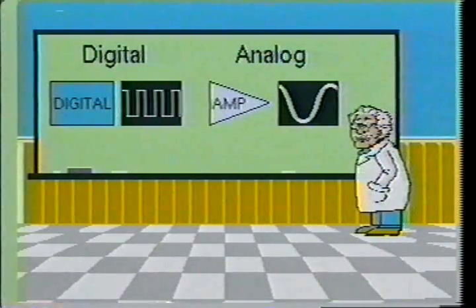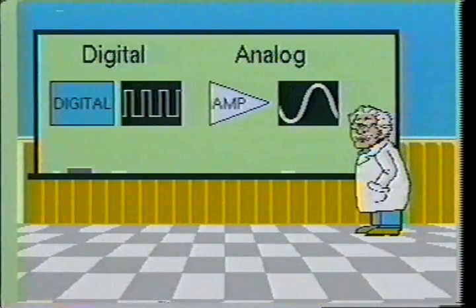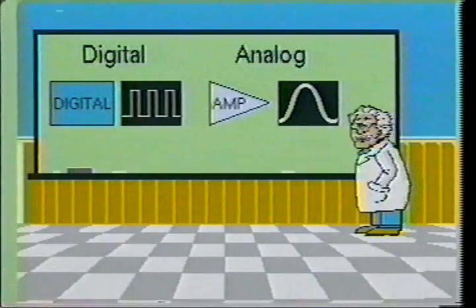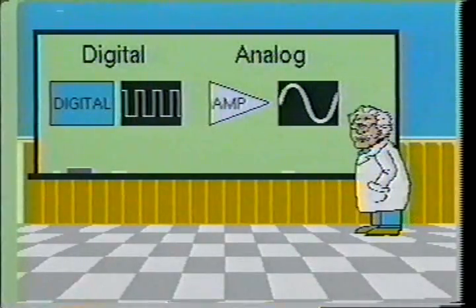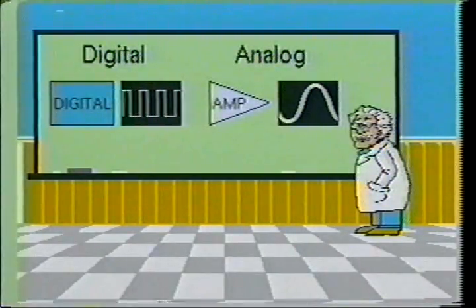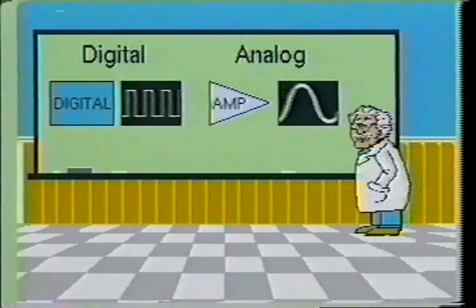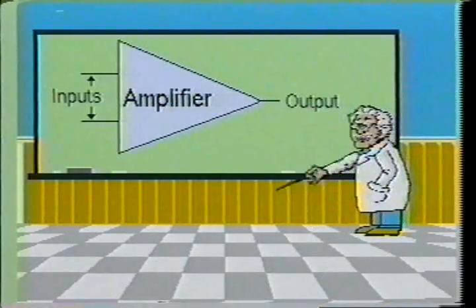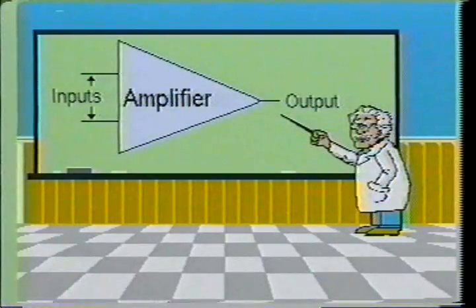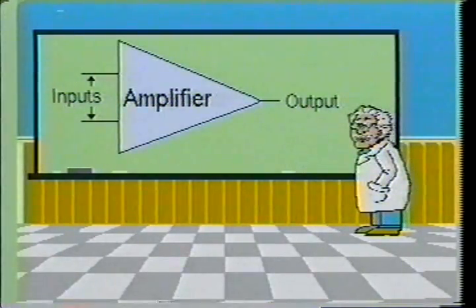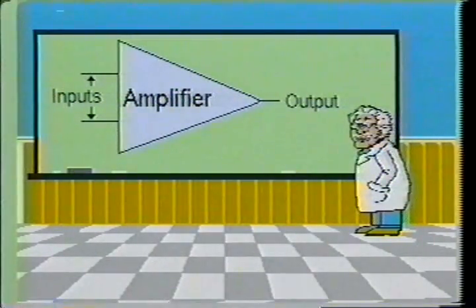When a semiconductor device is operated in a switching mode, it is being used as a digital device. When the devices are operated linearly, they are being used as analog circuits. The most commonly used analog circuit is the amplifier. The amplifier is represented by a triangular symbol which may be used to represent discrete component circuits or a multi-stage integrated circuit amplifier. There are many circuit configurations which exist between these two extremes.